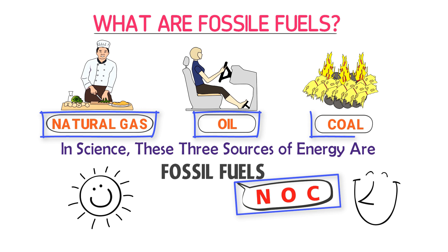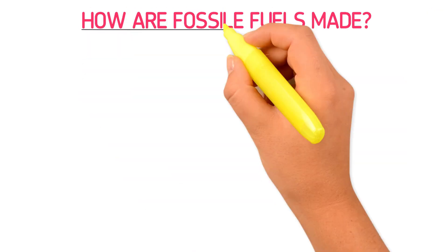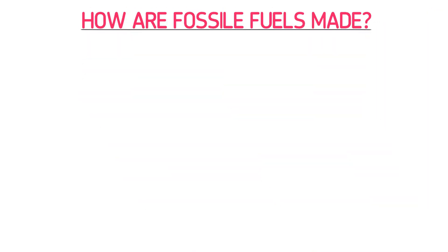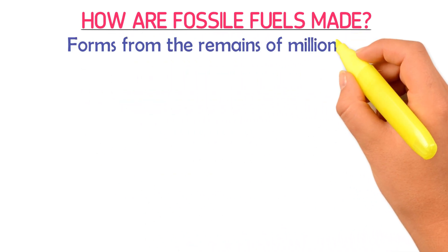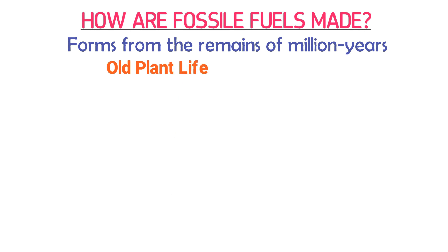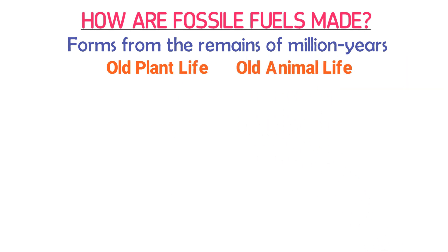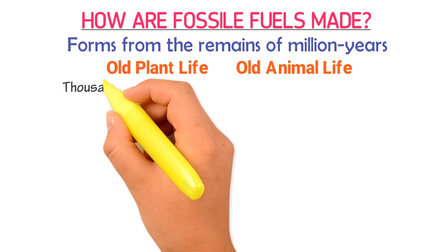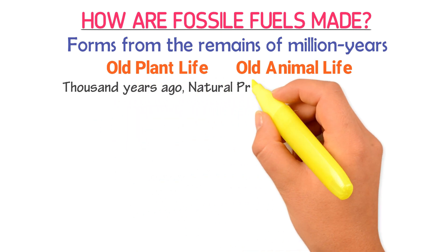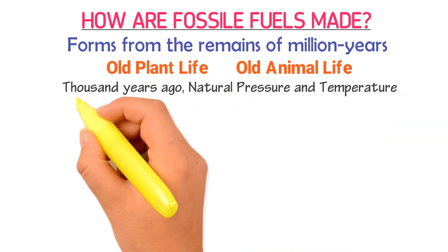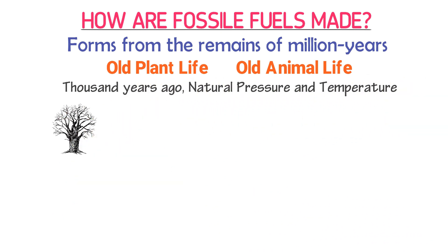The second question is: how are fossil fuels formed? Fossil fuels are formed from the remains of million-year-old plant life and animal life. For instance, hundreds and thousands of years ago, natural pressure and temperature converted dead plants into coal.